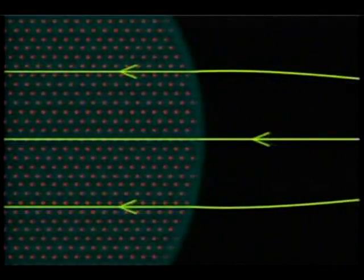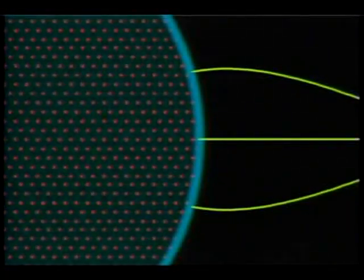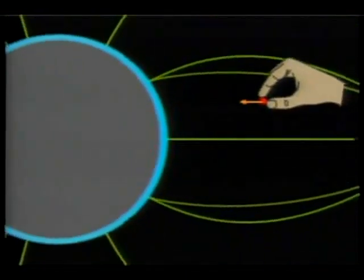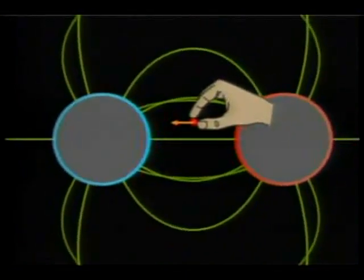That's because the charge piles up on the surface until there's no field left inside to make it move. Of course, electrically charged conductors do create electric fields outside themselves.